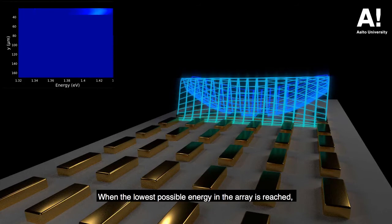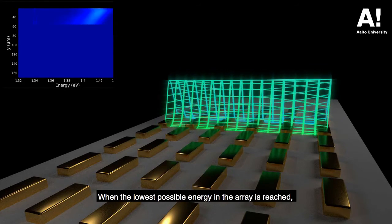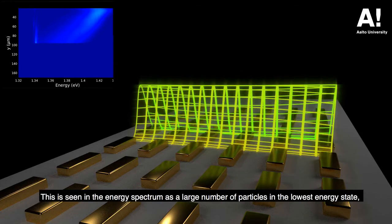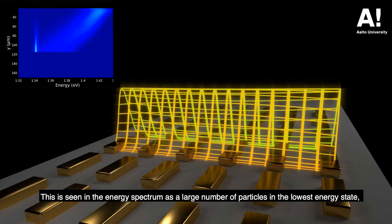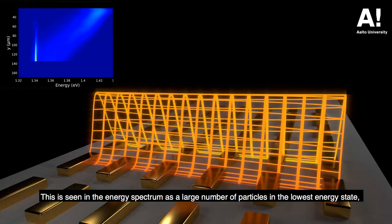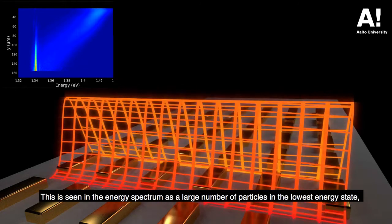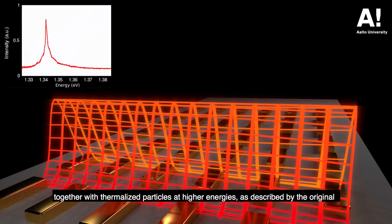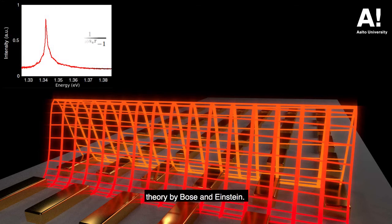When the lowest possible energy in the array is reached, the particles form a Bose-Einstein condensate. This is seen in the energy spectrum as a large number of particles in the lowest energy state, together with thermalised particles at higher energies, as described by the original theory by Bose and Einstein.